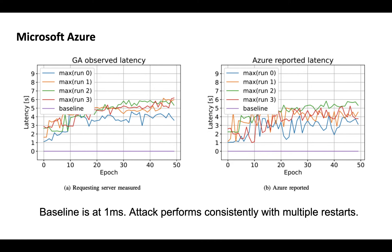Indeed, we find that we can discover sponge examples that cause performance degradation of Azure's provided translation service. Baseline is one millisecond for natural text, whereas sponge performance is almost seven seconds, with degradation factor estimated in thousands. We report four individual runs of the attack. Note that optimization happens over network and latency is noisy — the fitness function itself is noisy. The figure on the right shows Azure-reported latency numbers, whereas the figure on the left shows latency observed by our node running the attack. Interestingly, Azure-reported numbers have a lot more variation, suggesting that alongside the ML model, the attack exploits something in the pipeline. It is worth noting that we use very small inputs — in this experiment 50 characters long — and it's clear that larger inputs would have a much larger impact.